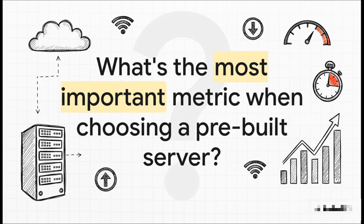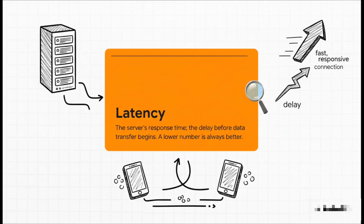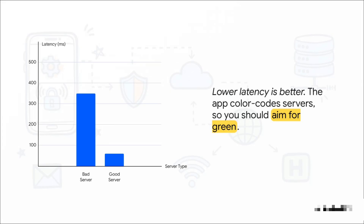If you pick a pre-built server, the tutorial really emphasizes that there is one single number — one metric — that you should pay attention to more than anything else. It's all about latency. All it means is the server's response time, that little delay before your data actually starts moving. Low latency equals a fast, snappy connection, and the rule is always lower is better. The app will often color-code these servers for you, which is super helpful. You want to aim for the green ones — a server with 60 milliseconds of latency is going to feel lightning fast compared to one sitting at 350. That difference is something you can really feel.